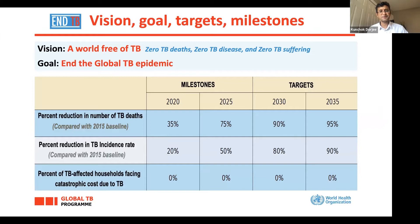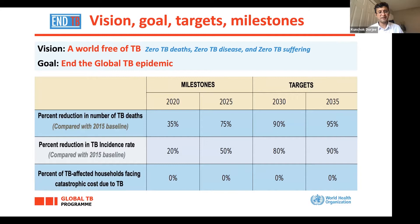Briefly, the vision, goal, and targets the World Health Organization has set: our vision is a world free of TB — zero TB deaths, zero TB disease, and zero TB suffering. The goal is to end the global TB epidemic. We set milestones for 2020: a 35% reduction in TB deaths, a 20% reduction in incidence rate, and zero percent of TB-affected households facing catastrophic costs due to TB.